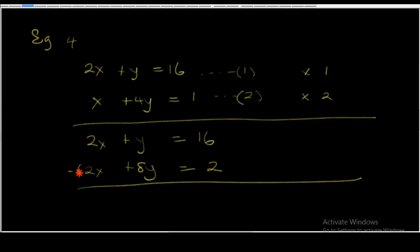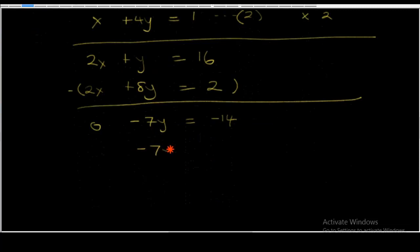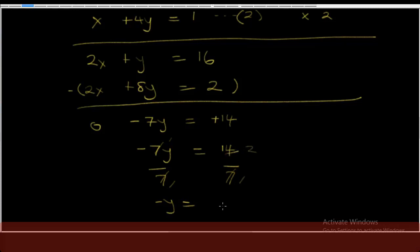2x minus 2x gives 0. 4y minus 8y gives minus 7y. And 16 minus 2 gives 14 — so minus 7y equals 14. Dividing both sides by 7, minus y equals 2, therefore y equals minus 2.